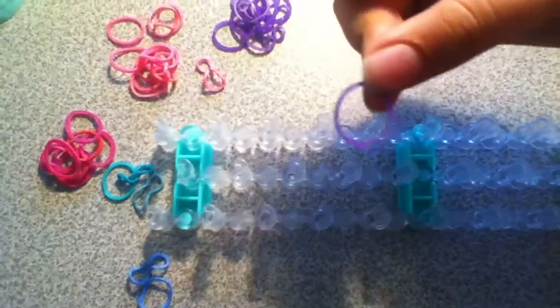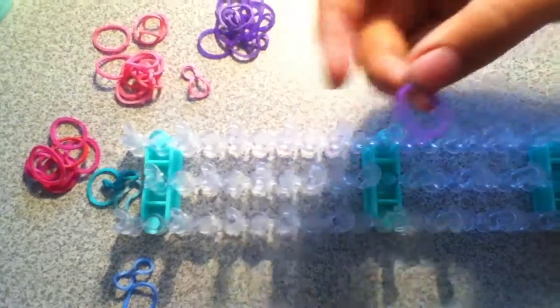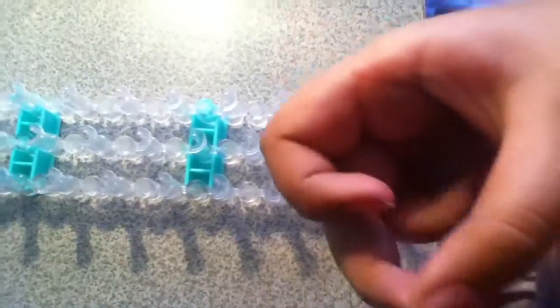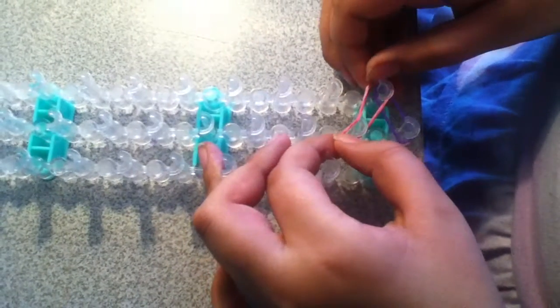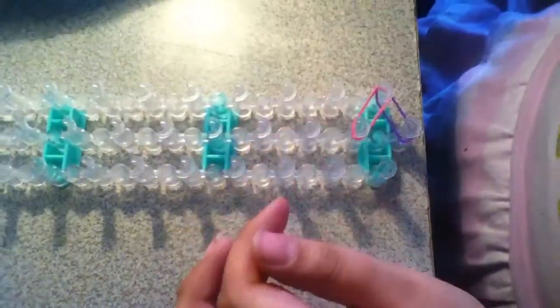First, you need to get any type of color band and then place it right here. And then get another type of color band, this one, and then place it like this. So it's like a zigzag pattern.